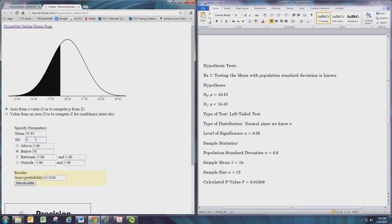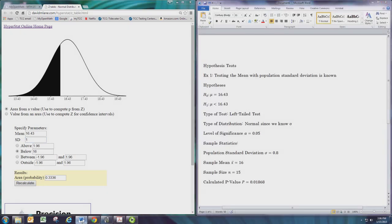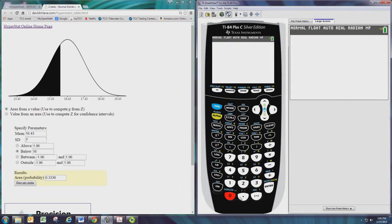The standard deviation here is the sampling distribution standard deviation. In order to find this, we need to take the standard deviation we were given for the population, which is 0.8, and we need to adjust that by dividing by the square root of the sample size. For an explanation of why this is done, see experience 8.